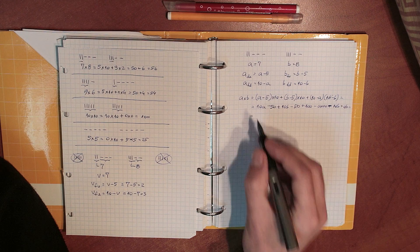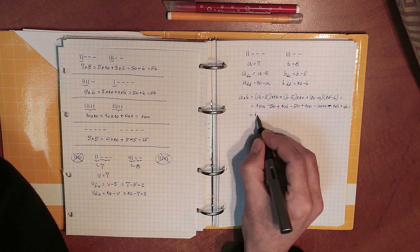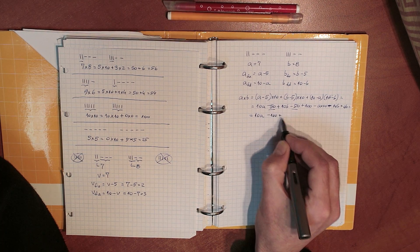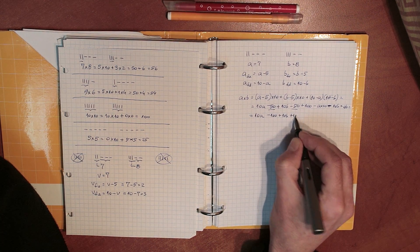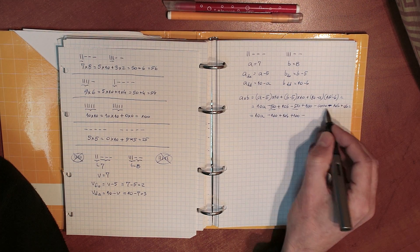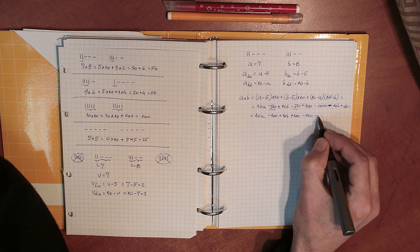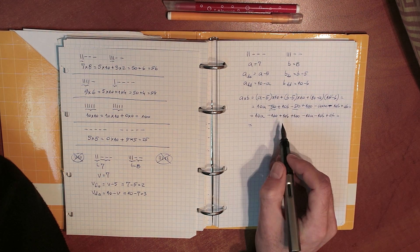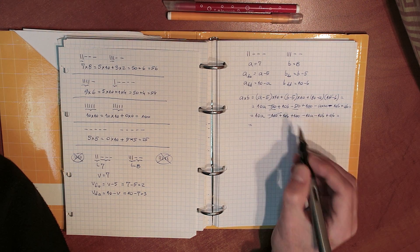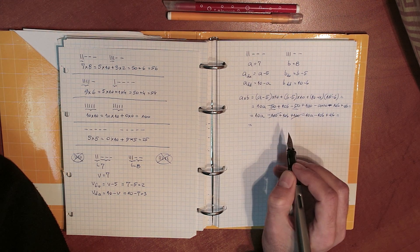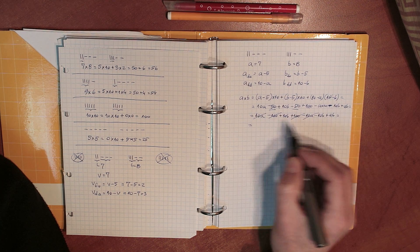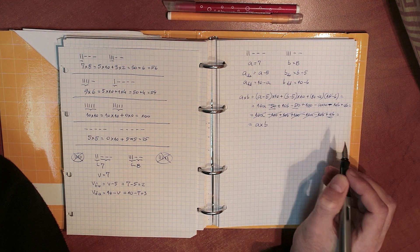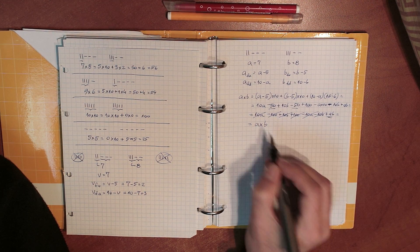Let's rewrite this in a nicer form. It's 10A, then minus 50 with minus 50 is minus 100, plus 10B, plus 100, this guy, minus 10A, minus 10B, plus AB. And this is where it gets interesting because minus 100 cancel out with plus 100, 10A with minus 10A, 10B with minus 10B, and I'm left with A times B, this guy. So A times B equals A times B.